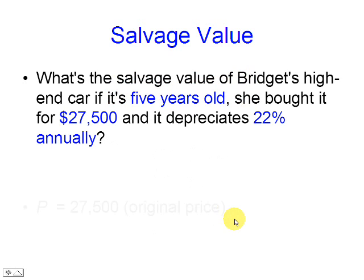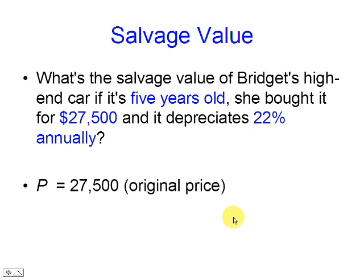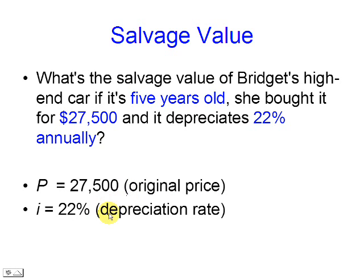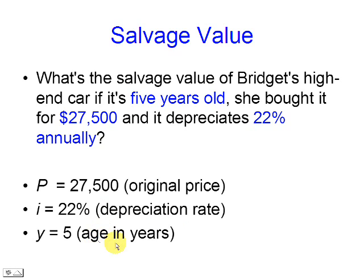In our case, P is 27,500. I is 22% and Y is five years.